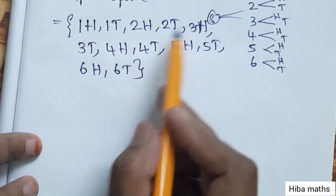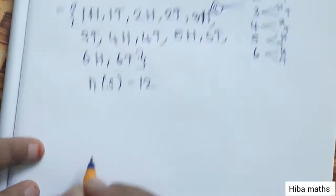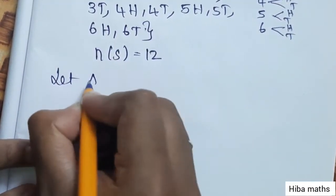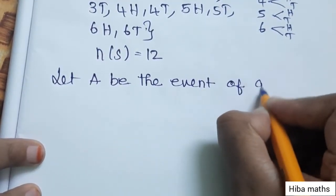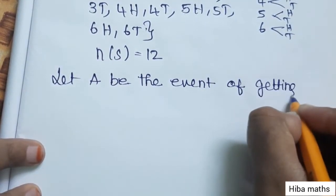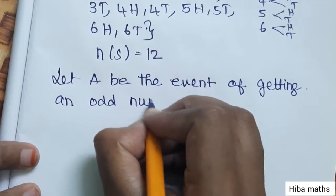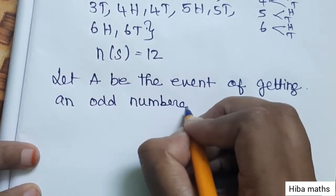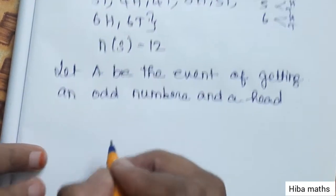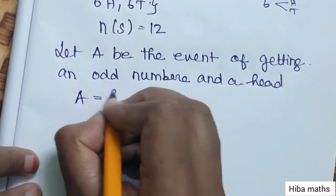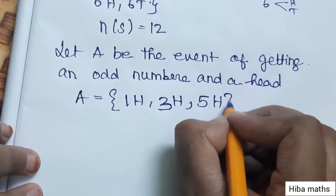Counting all outcomes: 1, 2, 3, 4, 5, 6, 7, 8, 9, 10, 11, 12. So N(S) = 12. Let A be the event of getting an odd number and a head.